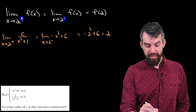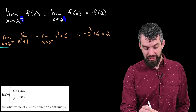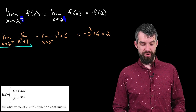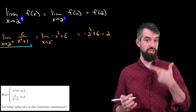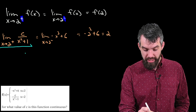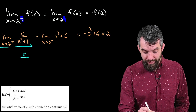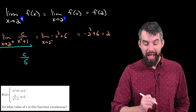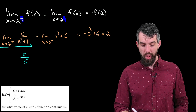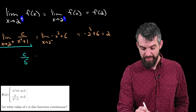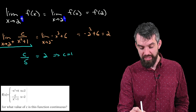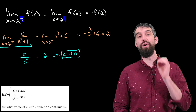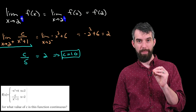The left-hand limit can be evaluated nicely by just plugging in the value of 2. So this is c divided by 5 — that's 2 squared plus 1. My claim is that this equals 2, and thus I get the value of c equal to 10, precisely what my graphical intuition told me.